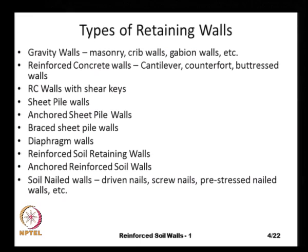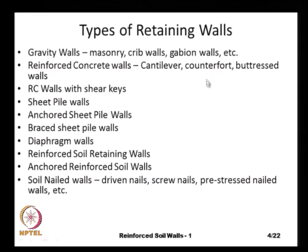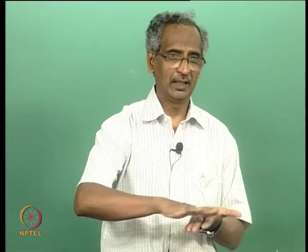A number of retaining walls are possible using different materials. The simplest one, used for centuries, is the gravity wall. Gravity walls derive their stability based on their mass or self-weight, using materials such as masonry — bricks or stone. Gabion walls are wire mesh baskets filled with stones to increase mass and can be used for retaining walls. Crib walls can be thought of like used tires laid horizontally and filled with soil.